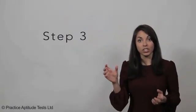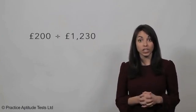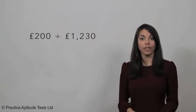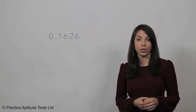In step three we need to work out what percentage 200, which we calculated in the previous step, is of the original number. So take 200 and divide that by £1,230, and you'll get the answer of 0.1626.